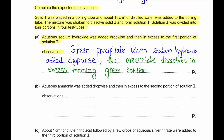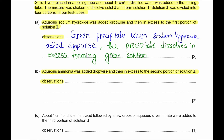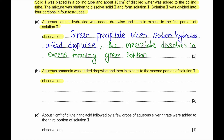Part B: Aqueous ammonia was added dropwise and then in excess to the second portion of solution I. With chromium ions, adding aqueous ammonia gives a grey-green precipitate. However, excess ammonia does not dissolve the grey-green precipitate.